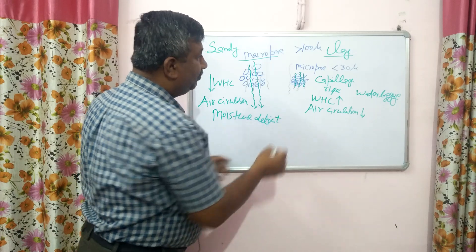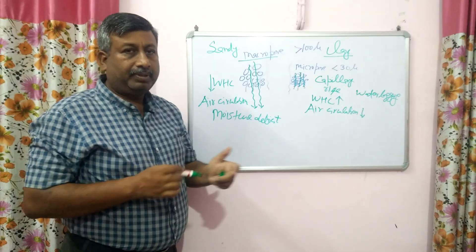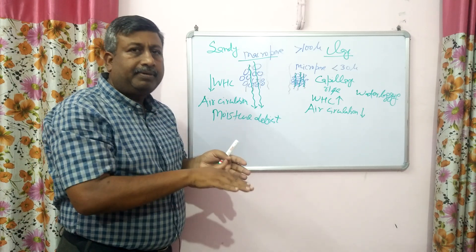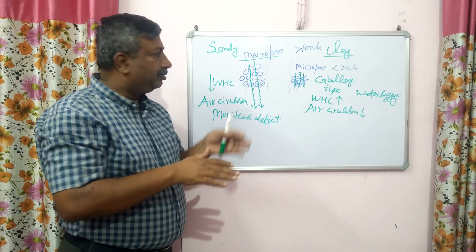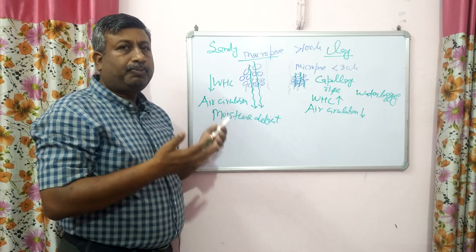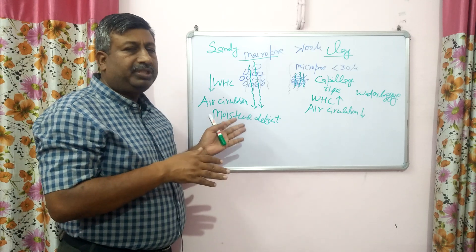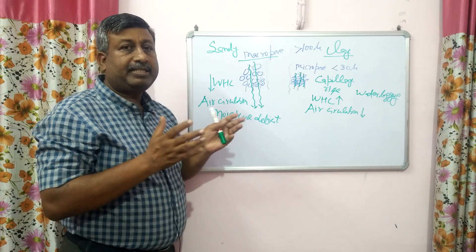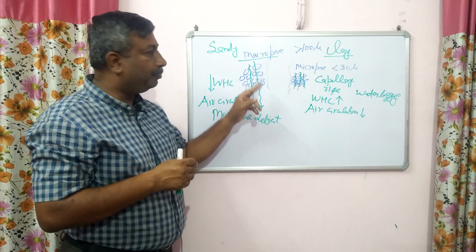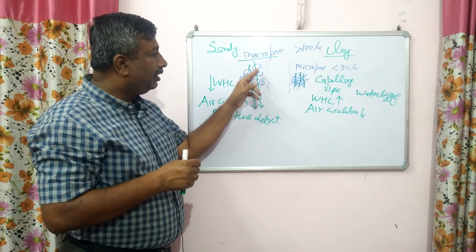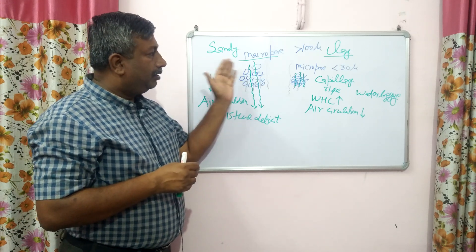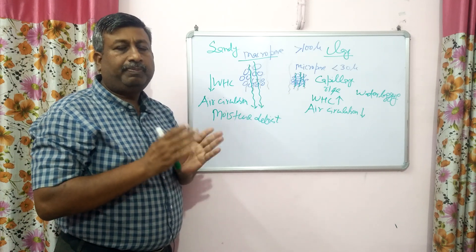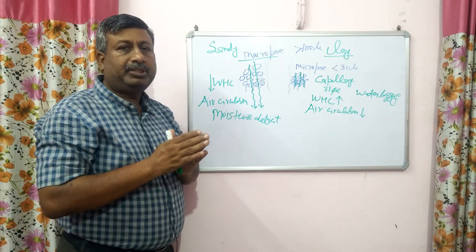In case of clay soil, water logging is the problem. Water is retained for a longer time, so water logging conditions may exist after rainfall or irrigation. In ideal soil, the ratio of capillary pores (micropores) and non-capillary pores (macropores) should be 1:1, i.e., 50:50, so that both moisture and air are available for plant growth.